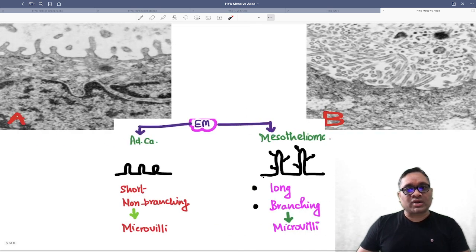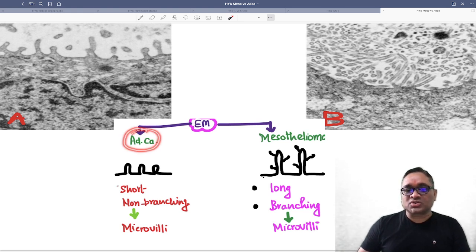Apart from this, we can use electron microscopy, which is very important to understand. On electron microscopy, adenocarcinoma will show short non-branching microvilli. You can see this electron microscopy is showing short non-branching microvilli.